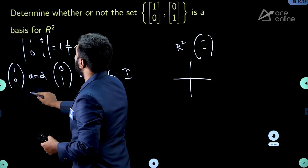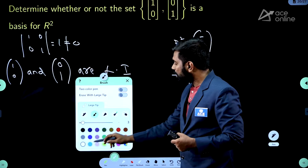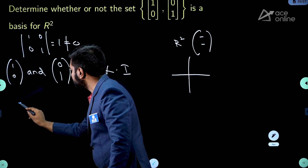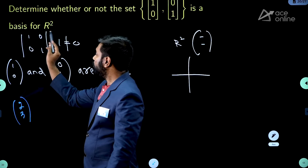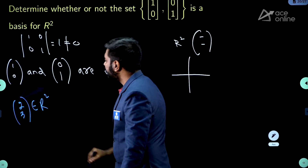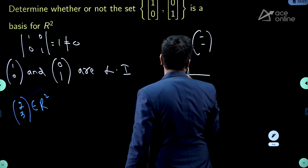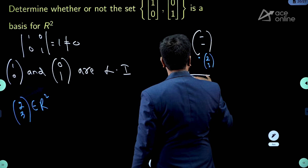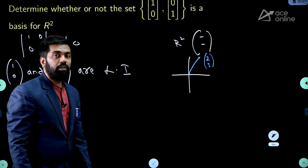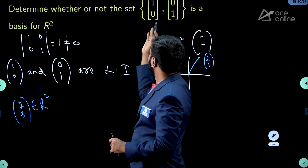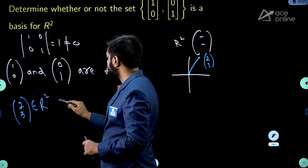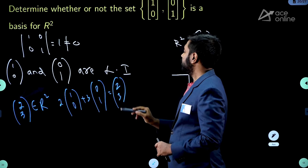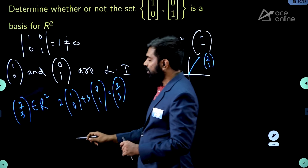The next thing to check: are they spanning R²? What is the meaning of spanning R²? You randomly take a vector in R², for example the vector (2,3). Clearly 2,3 belongs to R². Can you express this vector using these two vectors? Yes: 2 times (1,0) plus 3 times (0,1) gives you the vector 2,3. That means the linear combination of these two vectors gives this vector.